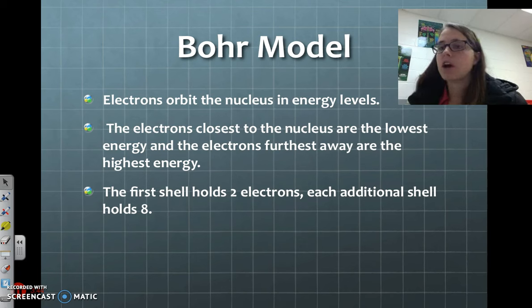Those that are furthest away, it takes a lot more energy to keep them in orbit, so they are the highest energy. The first shell orbiting the nucleus holds two electrons, and each additional shell will hold eight electrons. And this is called an octet.